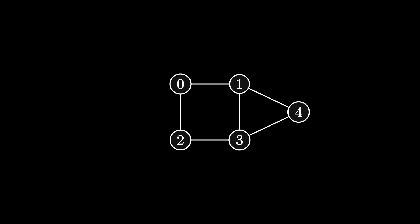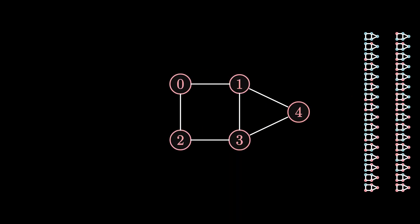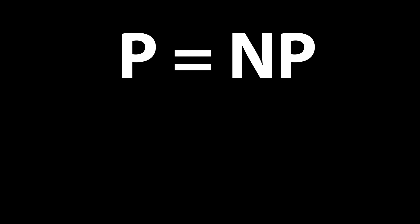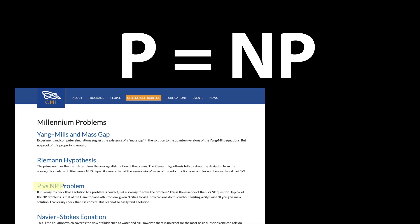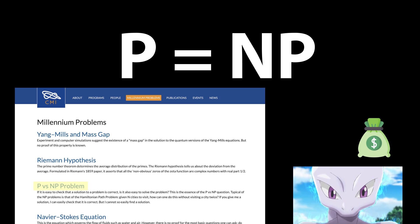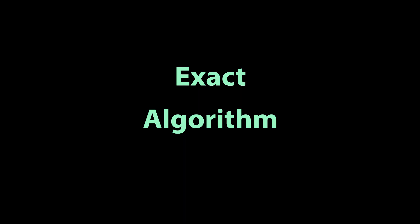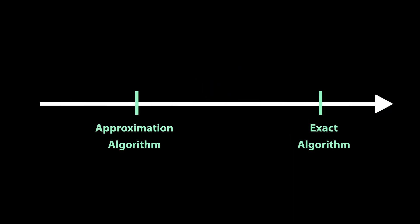The best algorithms we know of today that solve this problem are not that different from the naive algorithm that tries every possible combination of colors and picks the best one. And there are 2^n such combinations, so this algorithm becomes quickly infeasible. In fact, if you can find an algorithm whose running time is bounded by some power of n instead of 2^n, you would automatically solve the P equals NP question — one of the millennium prize problems that comes with a million dollar cash prize and legendary status in the math and computer science communities.